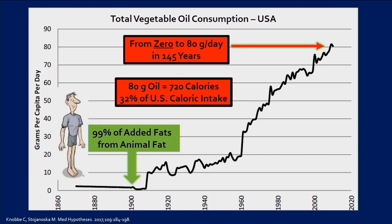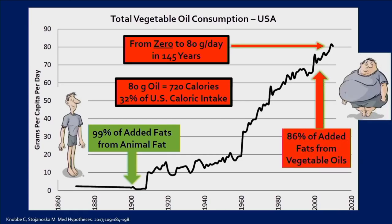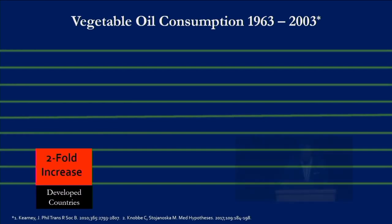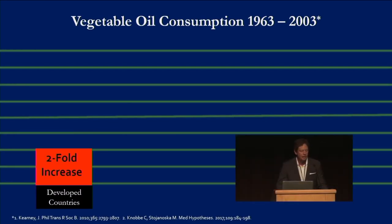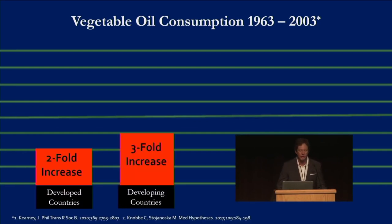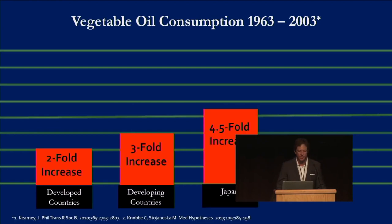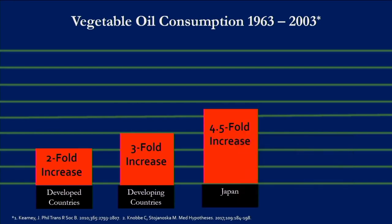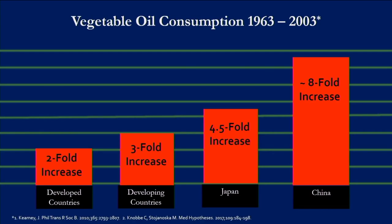In 1900, 99% of our added fats came from animal fat — this is all published data. By 2005, 86% of added fats came from vegetable oils. The vegetable oils almost completely supplanted animal fats: lard, butter, and beef tallow. And think it didn't happen worldwide? Just in the period between 1963 and 2003, in developed countries, vegetable oil consumption doubled. In developing countries, it tripled. Japan saw a four-and-a-half-fold increase. China saw almost an eight-fold increase in this period. And the Asians are getting sick as we are.